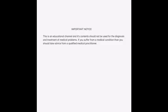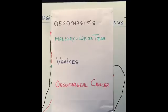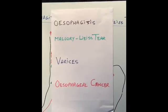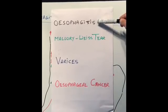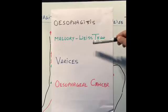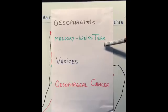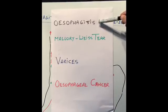Hello everyone, thanks for watching my channel. Today's video covers different conditions which can cause bleeding from our food pipe or the esophagus. I have chosen four conditions: number one is esophagitis, then Mallory-Weiss tear or Mallory-Weiss syndrome, varices, and esophageal cancer.